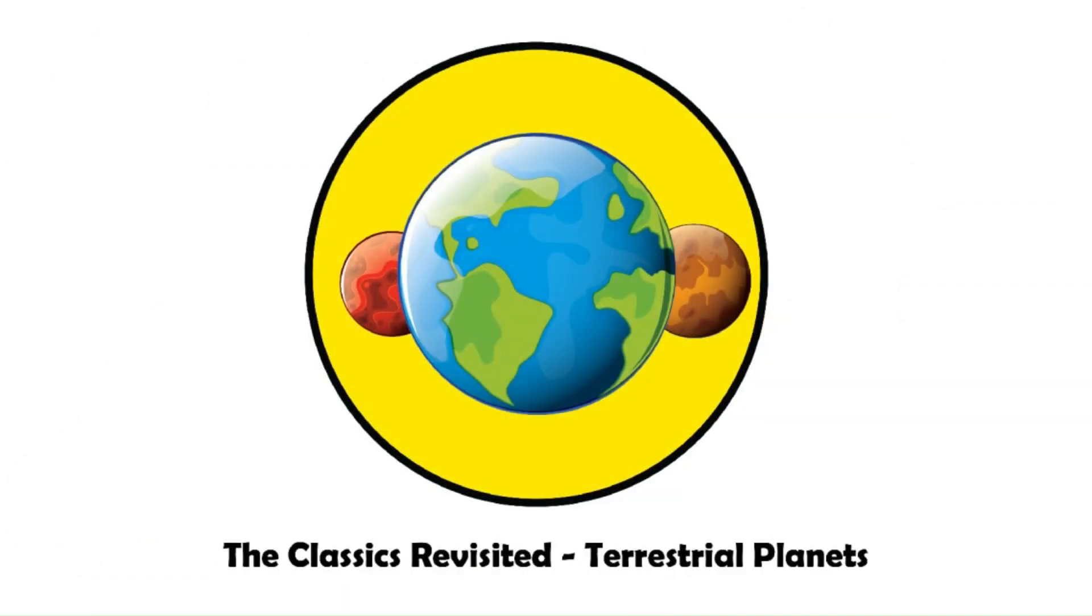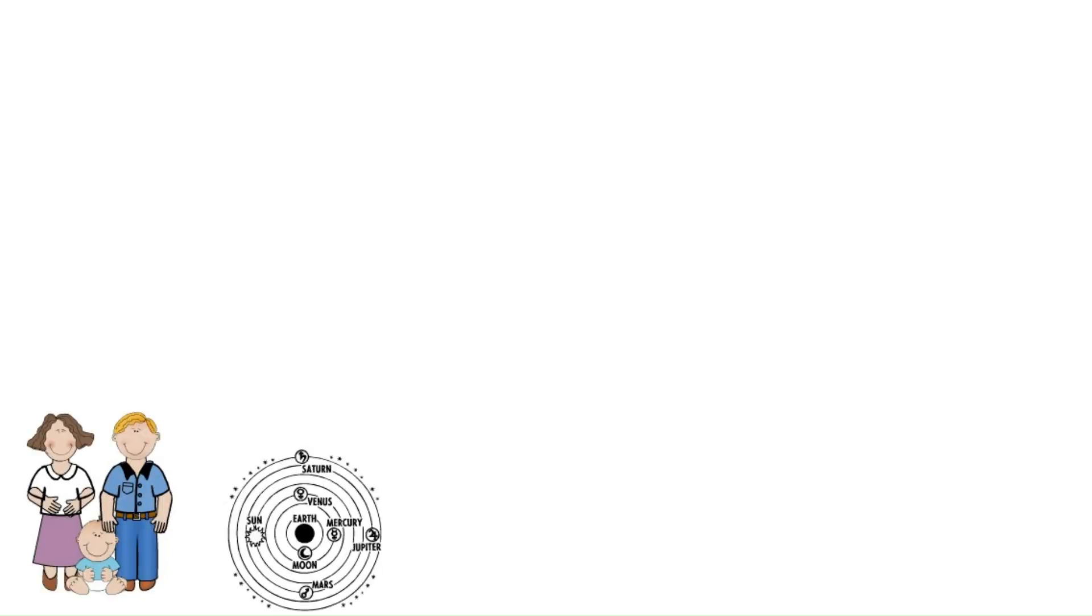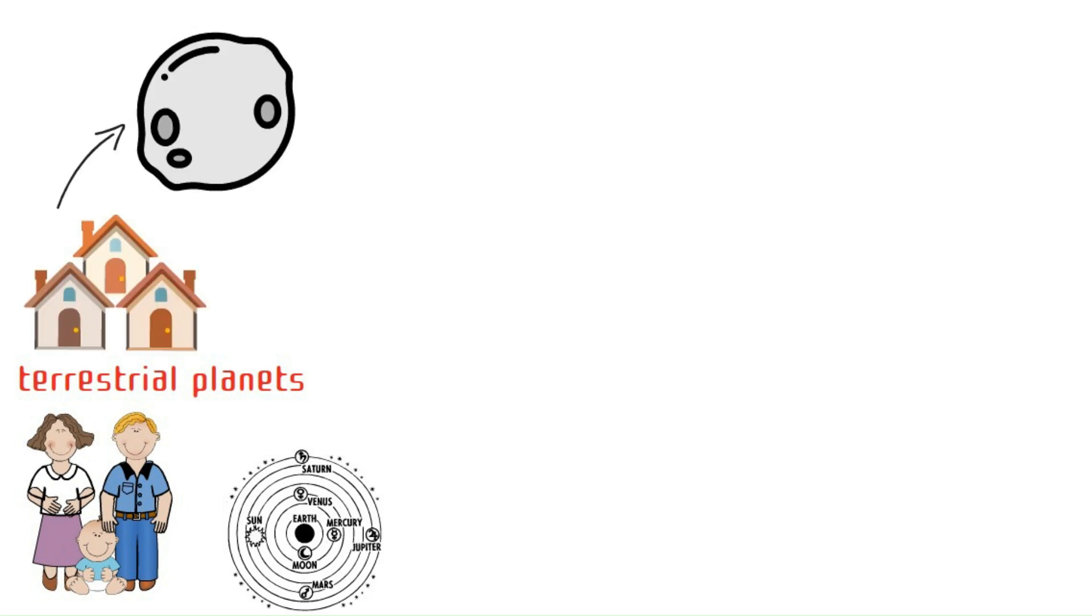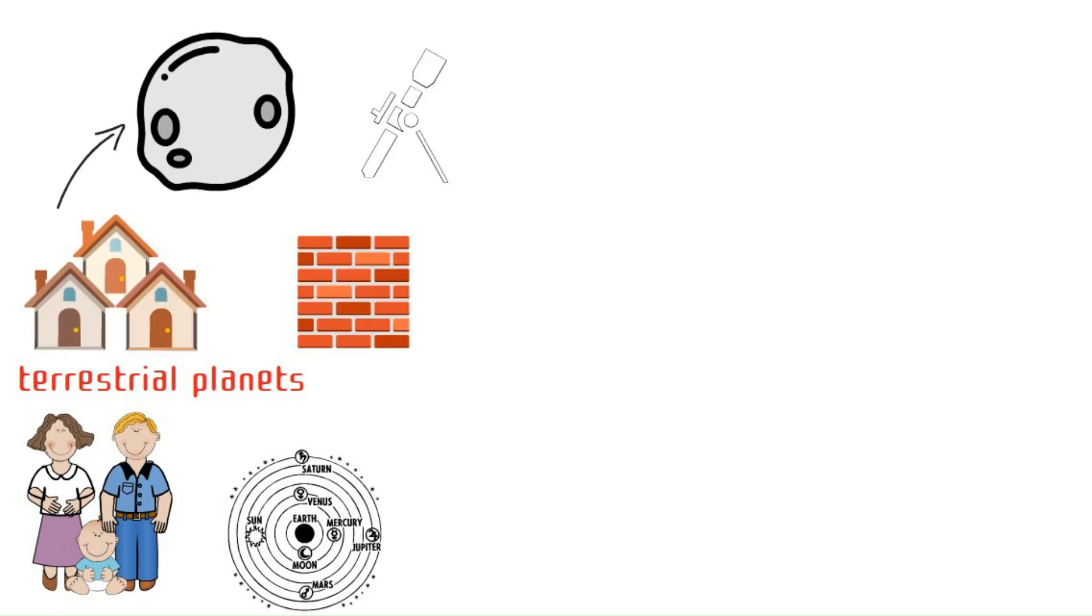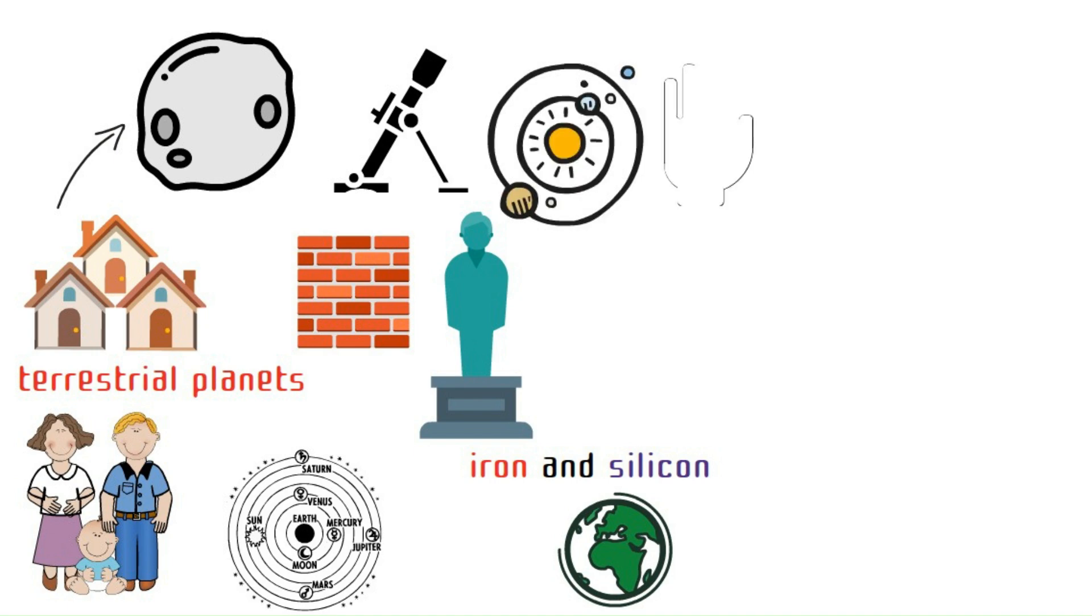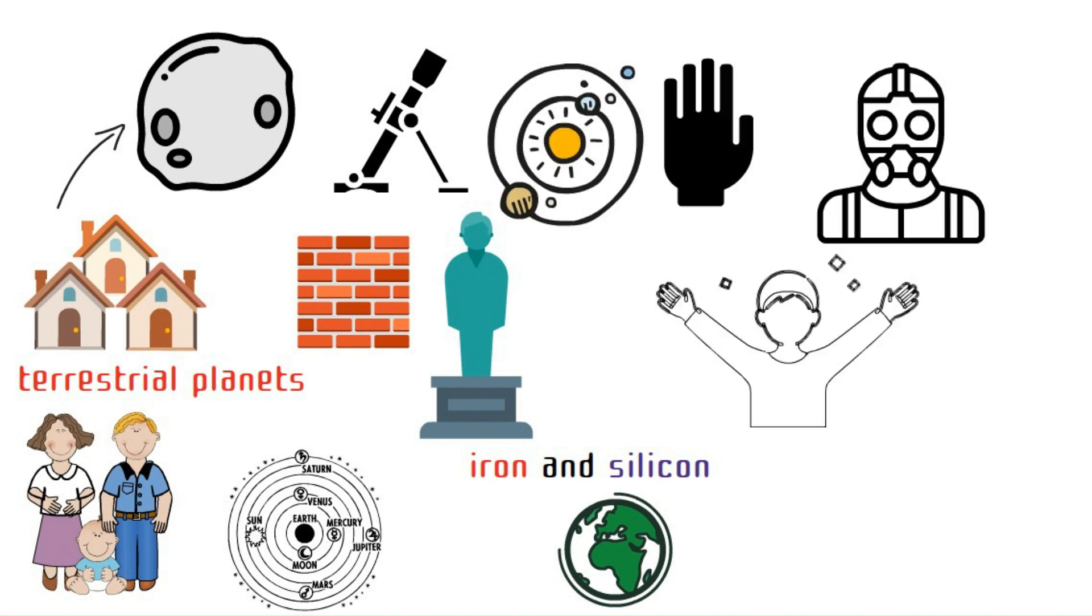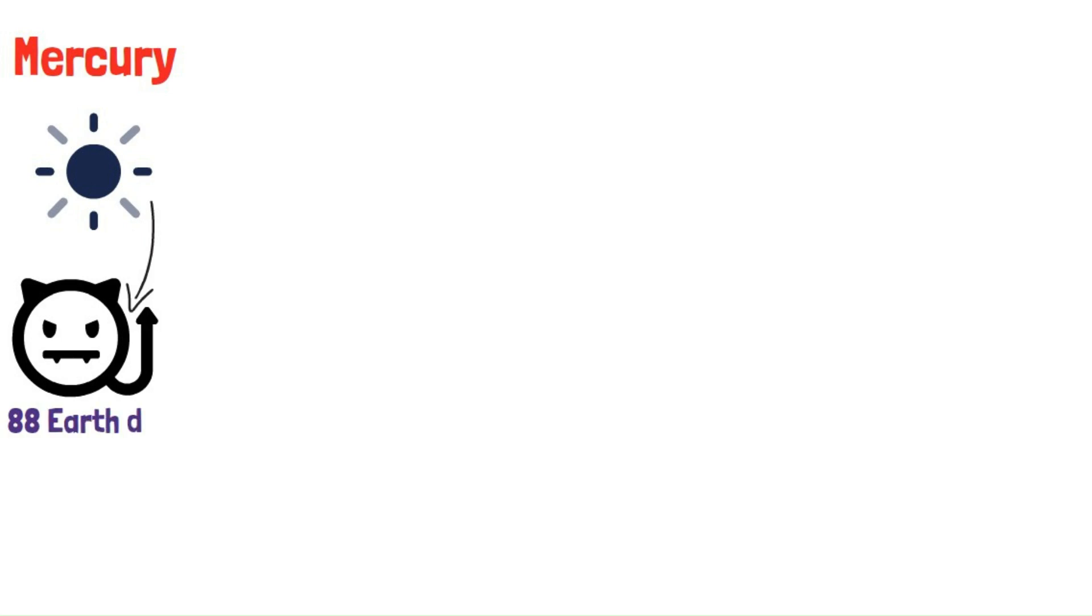The classics revisited. Terrestrial planets. First up, the familiar faces from our own solar system. We have the terrestrial planets. Our celestial neighborhood brims with rocky planets, the cosmic brick and mortar. These Earth-like planets with their iron and silicon cravings are the solid citizens of our solar system, holding their own against the swirling gas giants. But within this group lies surprising diversity. Mercury, the Sun's pint-sized speed demon, zooms around in a record 88 Earth days, a scorched world with daytime temperatures that would melt lead.